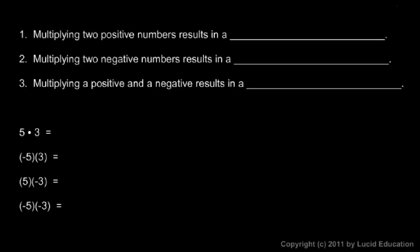Now we'll talk about multiplying integers. You need to be able to multiply numbers regardless of their sign, whether they're positive or negative. The rules for multiplying integers are really simple. Multiplying two positive numbers results in a positive number. Multiplying two negative numbers also results in a positive number. And multiplying a positive and a negative — it doesn't matter which one comes first, as long as one is positive and one is negative — the result will be a negative number.